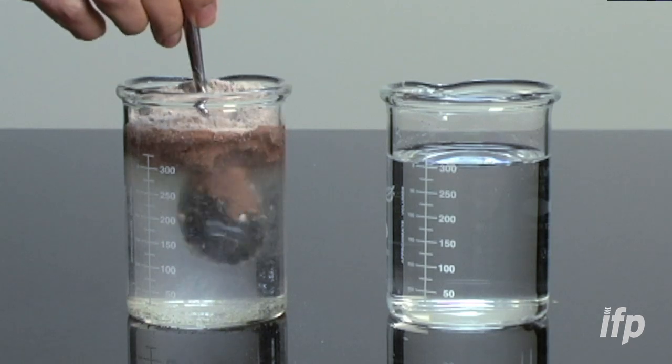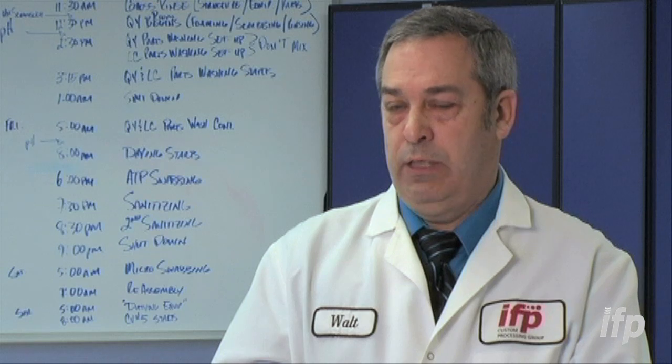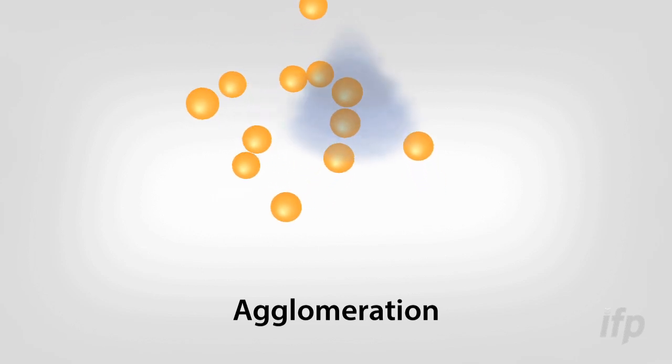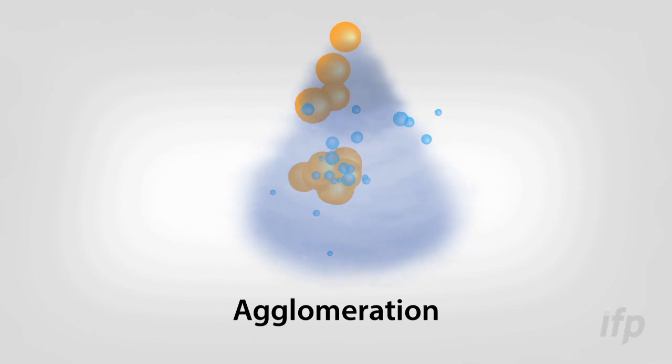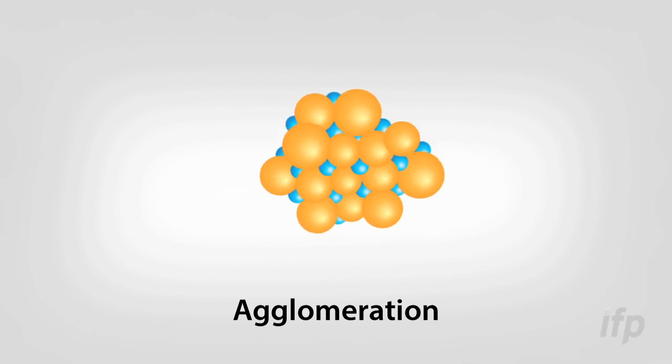What agglomeration does is it glues multiple particles together with bridges that allow water to flow in between those particles, so that the water actually attacks all of or maximizes the surface area that the water can get to on an agglomerated particle. In other words, multiple particles glued together with bridges between them.